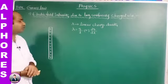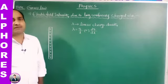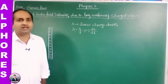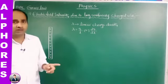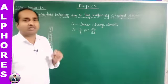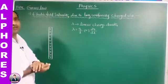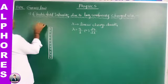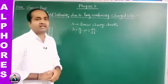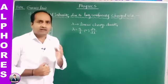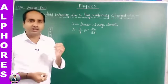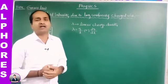Using Gauss's law we should calculate the electric field intensity at a normal distance R from the axis of the wire. The statement of Gauss's law: the total electric flux passing through any closed surface is equal to 1 by epsilon-naught times the net charge enclosed by the surface.